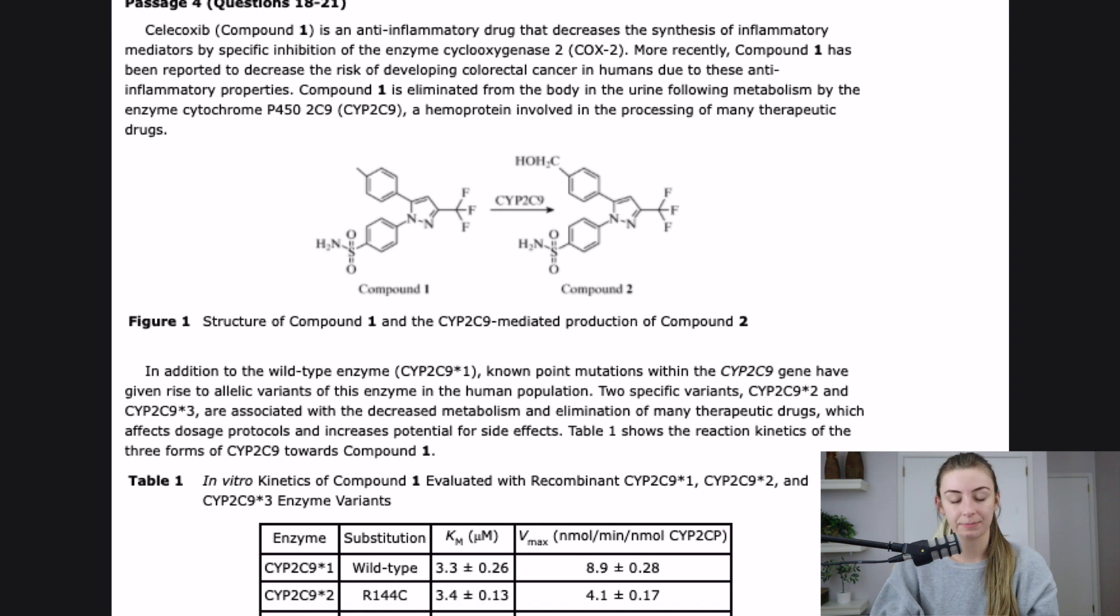This is a great passage for flow charting. Celecoxib compound one is an anti-inflammatory drug that decreases the synthesis of inflammatory mediators by specific inhibition of the enzyme cyclooxygenase two. So decrease inflammatory mediators by inhibiting COX-2.